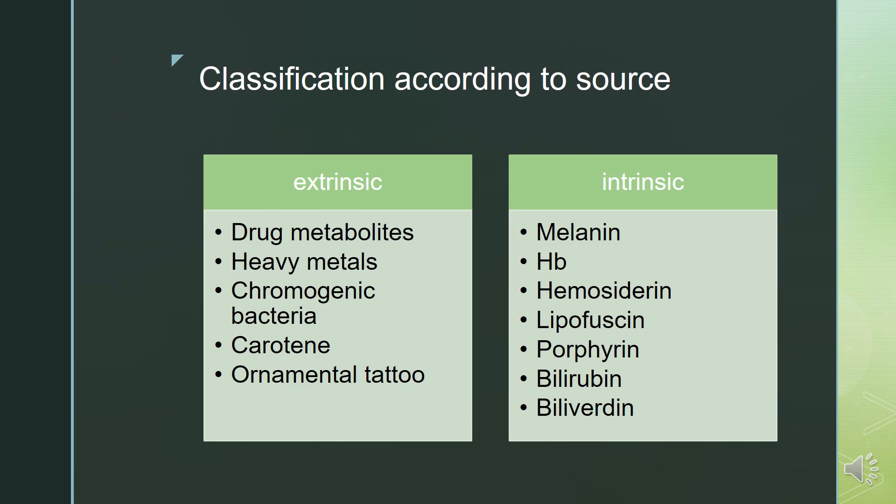Starting with the classification according to source, it can be divided into extrinsic and intrinsic. Extrinsic sources are drug metabolites, heavy metals, chromogenic bacteria, carotene, and ornamental tattoos. Intrinsic sources are melanin, hemoglobin, hemosiderin, lipofuscin, porphyrin, bilirubin, and biliverdin.